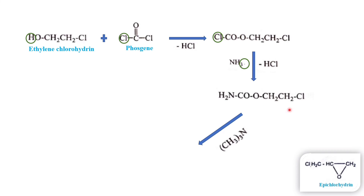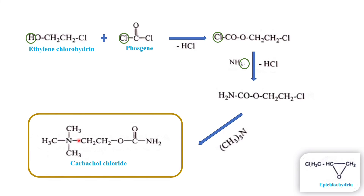With the second intermediate we add trimethylamine. The bond between the carbon and the chlorine is broken, trimethylamine is inserted, and we obtain carbachol chloride. To summarize: ethylene chlorohydrin is treated with phosgene with removal of one molecule of HCl; then amination with ammonia removes another HCl and adds NH2; finally treatment with trimethylamine gives carbachol chloride. Thank you.